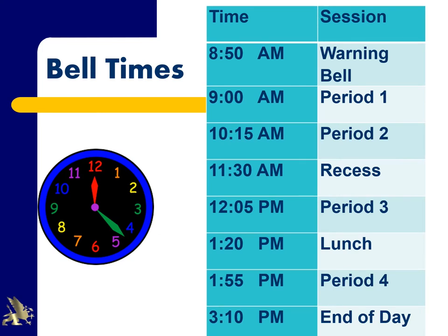Bell times: we encourage students to be at school by quarter to eight at the latest, preferably earlier. A lot of socialisation happens at school, especially after lockdown, so arriving well before the warning bell at 8.50 is recommended. Period one starts at 9am and runs for 75 minutes. Period two commences at 10.15am. Students have a 35-minute recess between 11.30 and 12.05, followed by lunch between 1.20 and 1.55. Period four runs from 1.55 to 3.10, after which the school day concludes.